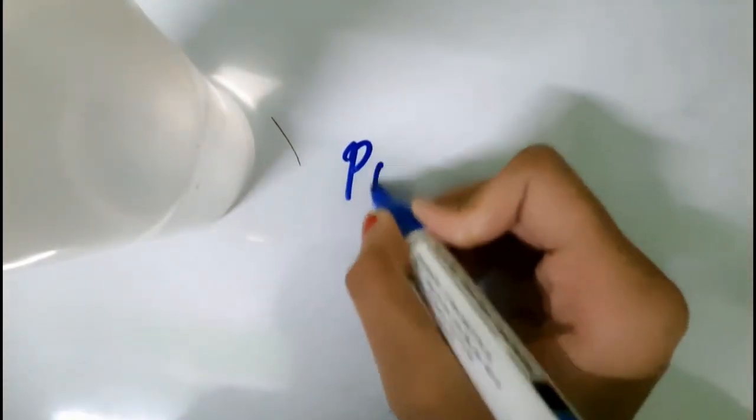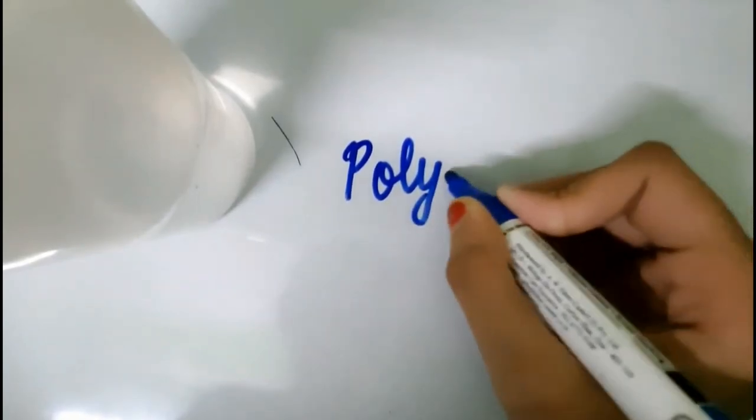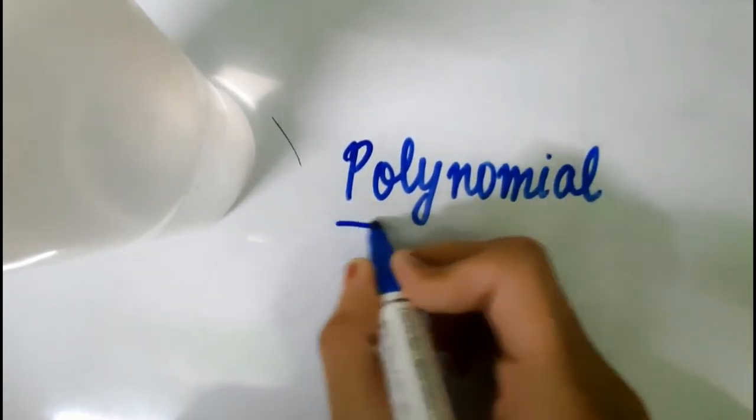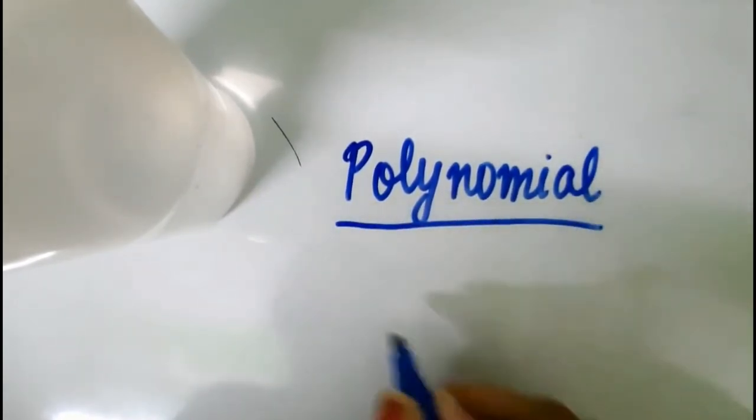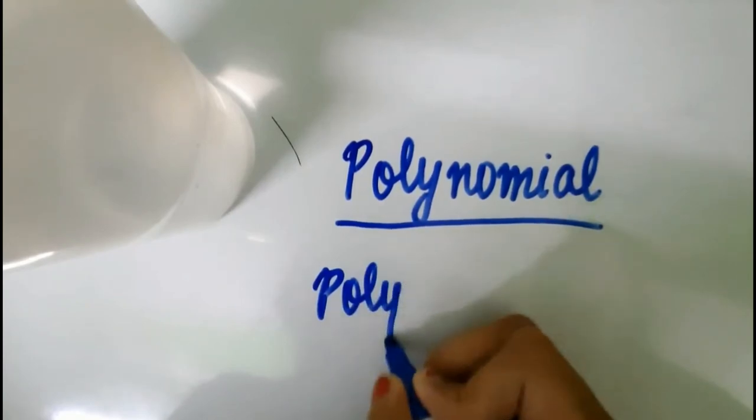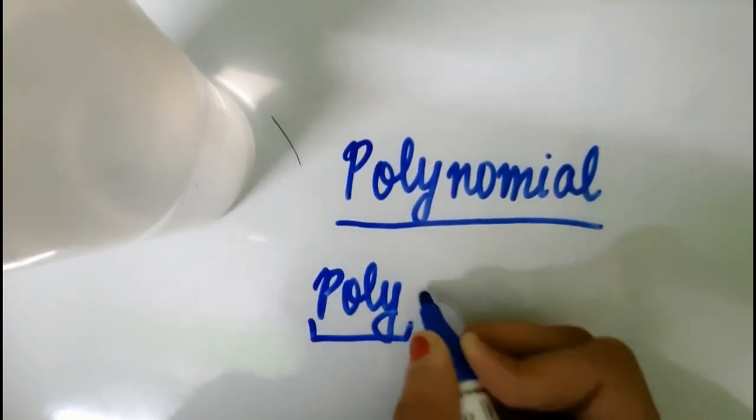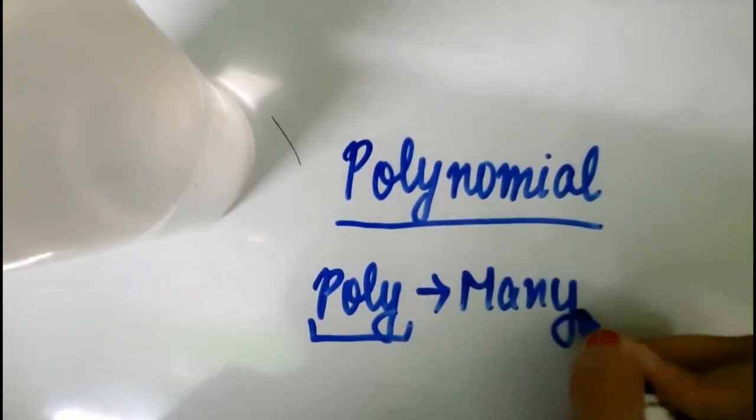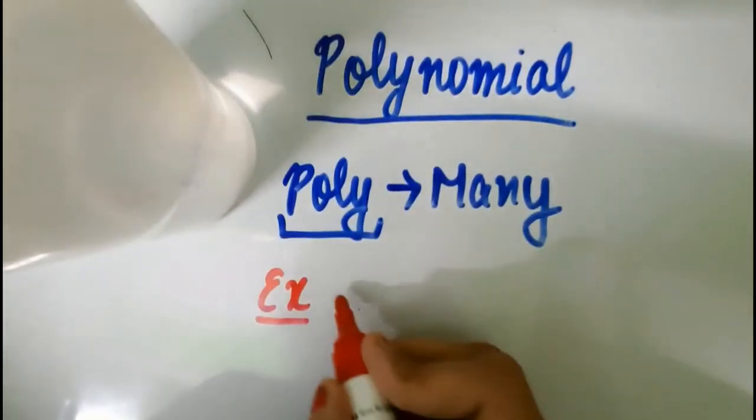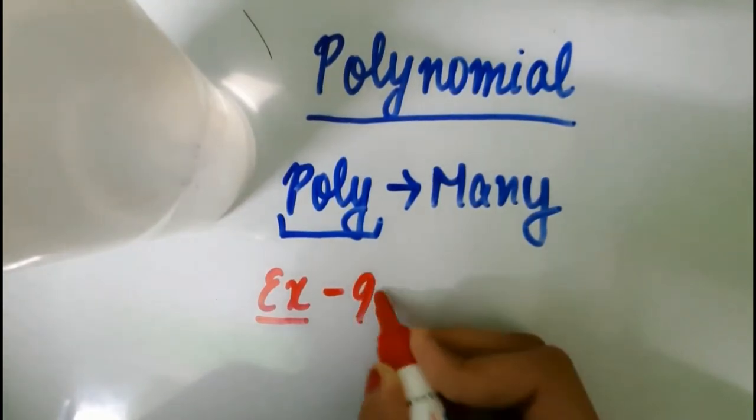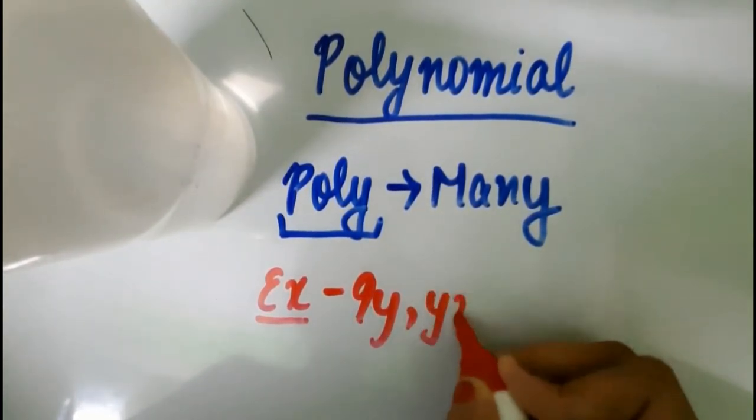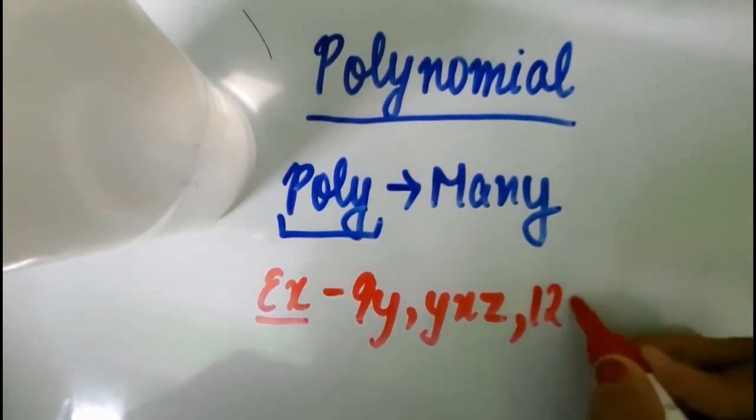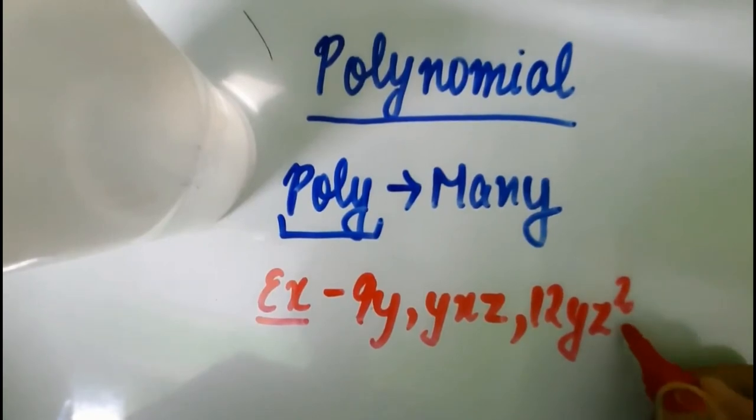Now there is one more term which is polynomial. It is an algebraic expression with one or more terms having positive integral powers of the variables. Since poly means many, it is assumed that polynomials should have many terms, but a polynomial can be a monomial, binomial, or a polynomial. For example, 9y, yx, z, 12yz square, and so on.